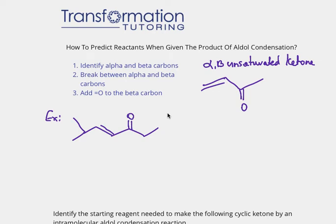In this video I will teach you a trick of how to predict reactants when we are given a product of aldol condensation. The product of aldol condensation is an alpha-beta unsaturated ketone, but an easier way to think about it is a double bond followed by a single bond followed by a double bond to oxygen. If we have that double-single-double bond=O pattern, then we have a product of aldol condensation.